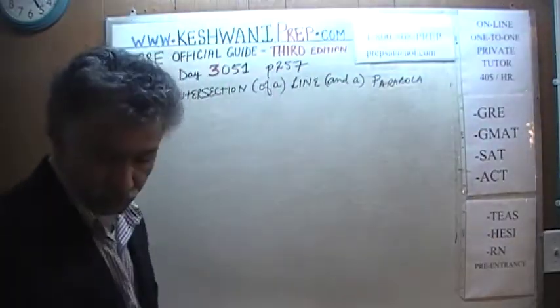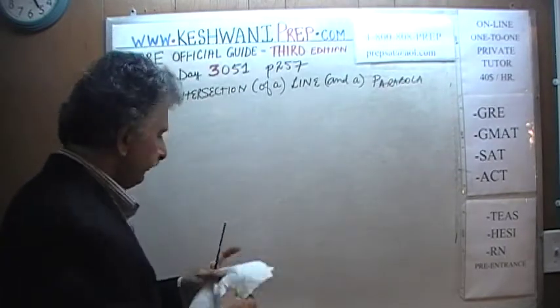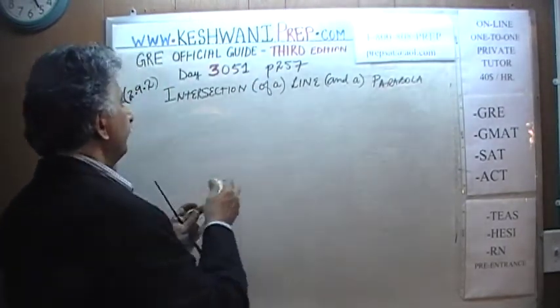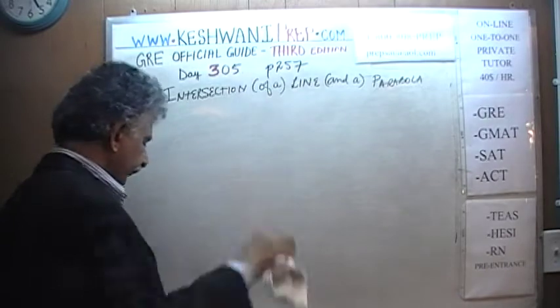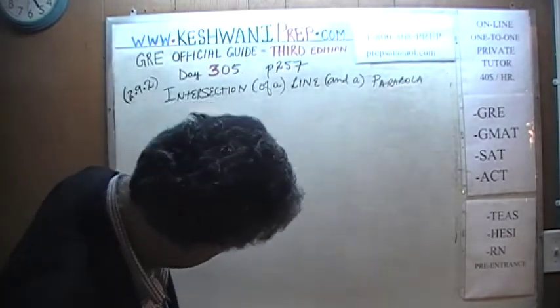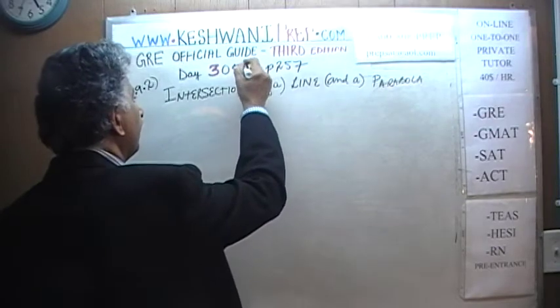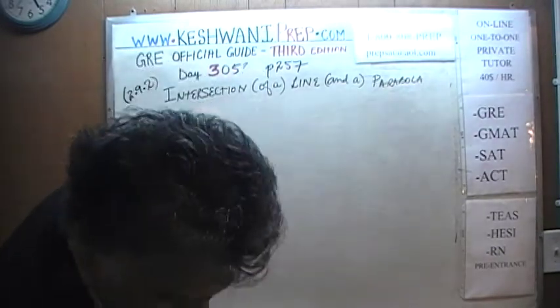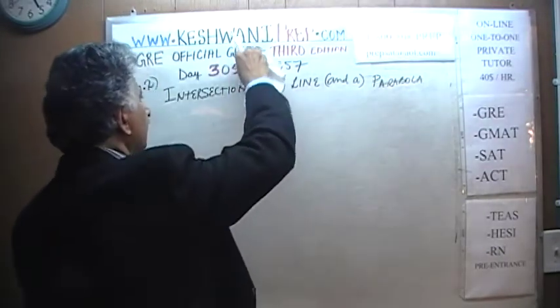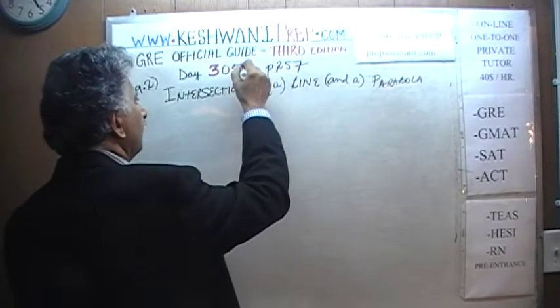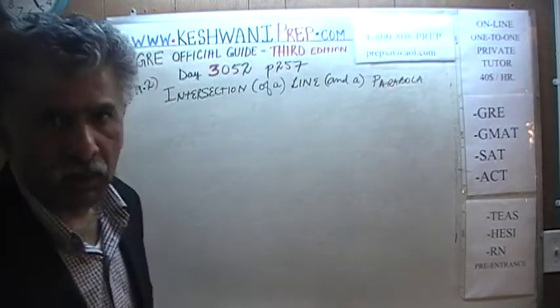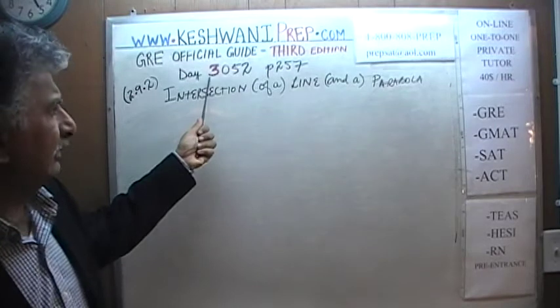Today is our lesson number 52. It should say 52, not 51. Lesson number 52 out of the third edition, hence 3052.